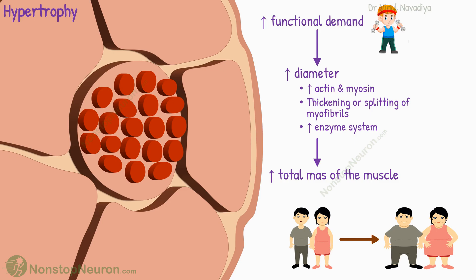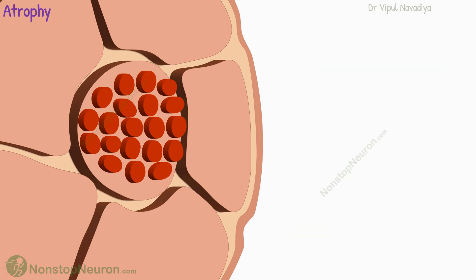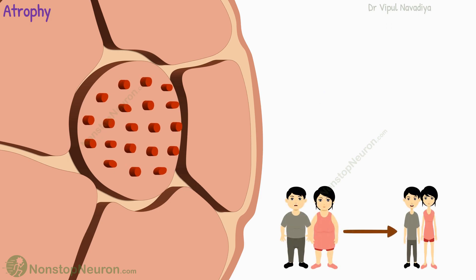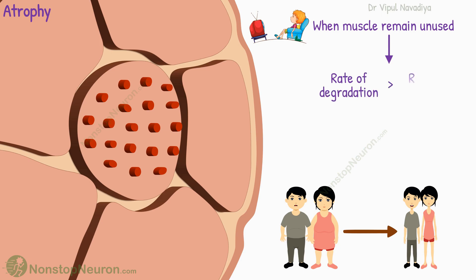Now atrophy — atrophy is the opposite of hypertrophy. It refers to a decrease in the total mass of the muscle; it's like muscle fibers are getting slimmer. It occurs when a muscle remains unused for an extended period. During atrophy, the rate of degradation of muscle proteins exceeds the rate of their generation, resulting in a decrease in muscle mass.